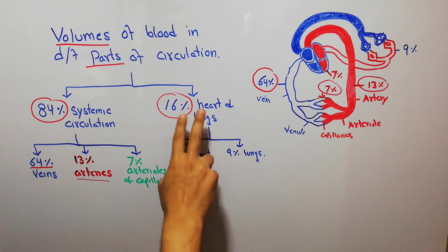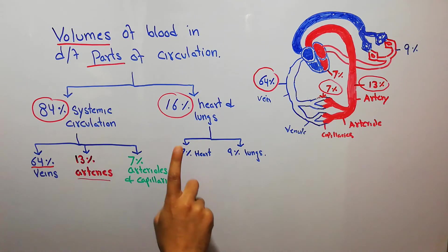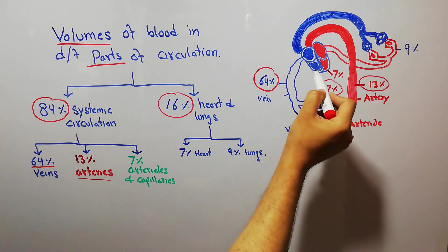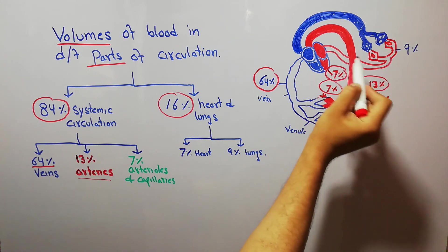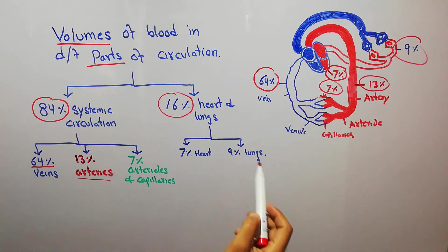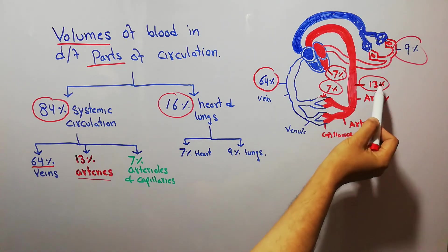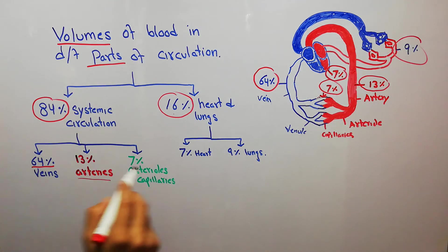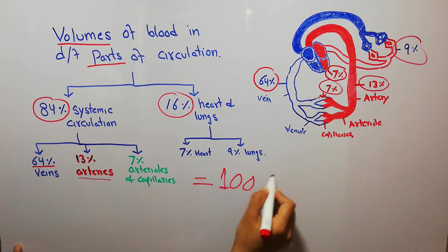The remaining 16% present in the heart and lungs is further divided: 7% is present in the heart and 9% is present in the lungs. So 7 plus 9 equals 16. To recap: 7% in the heart, 9% in the lungs, 64% in the veins, 13% in the arteries, 7% in the arterioles and capillaries — and if we sum them all together, it comes to 100%.